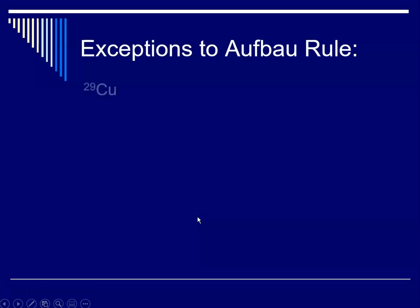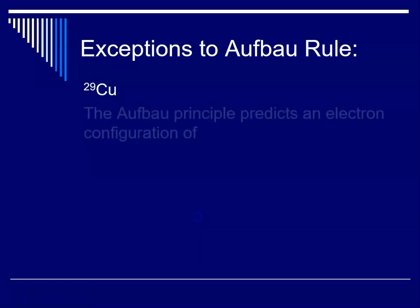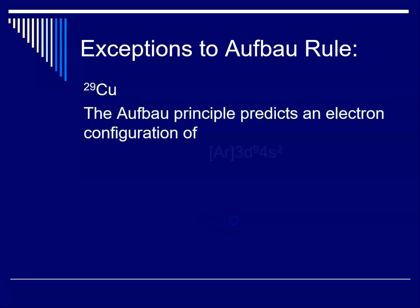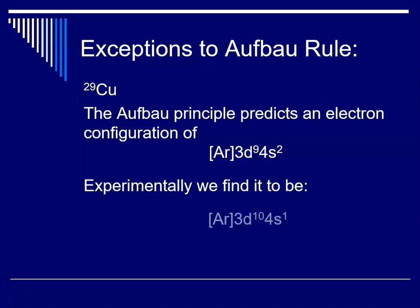Now let's look at copper, which has atomic number 29. And again, the Aufbau principle would predict a 3d⁹ and a 4s², but what we experimentally find is 3d¹⁰, 4s¹. So let's see what that looks like.